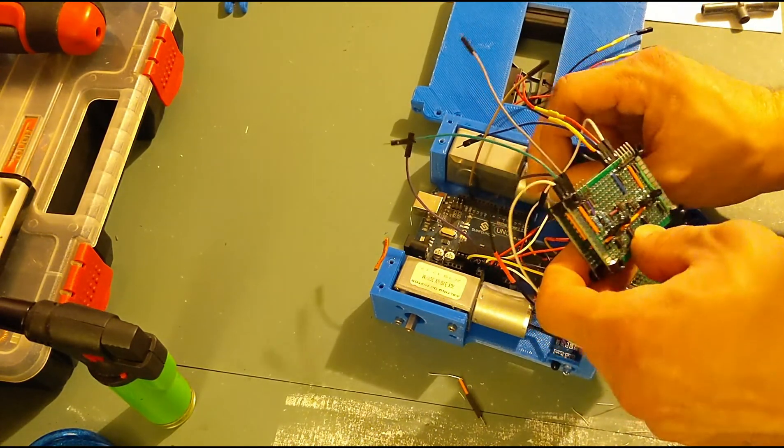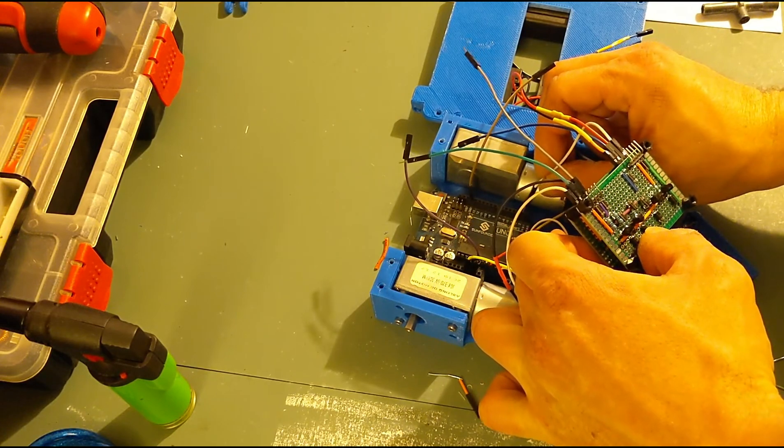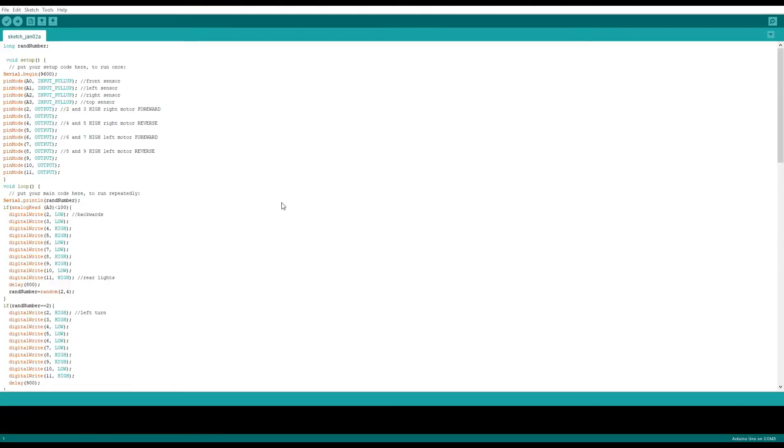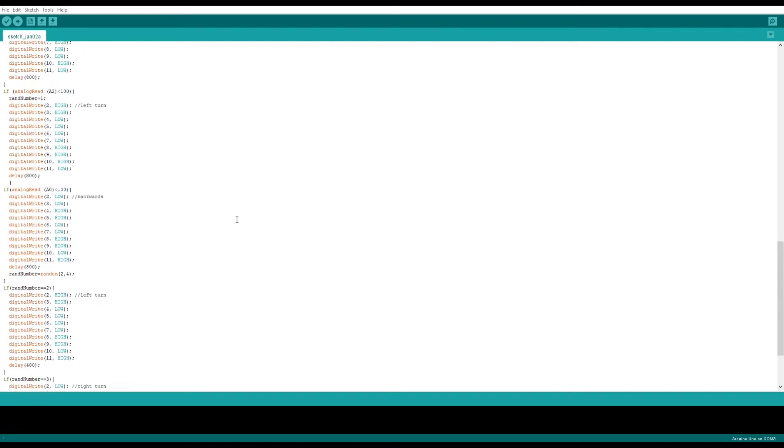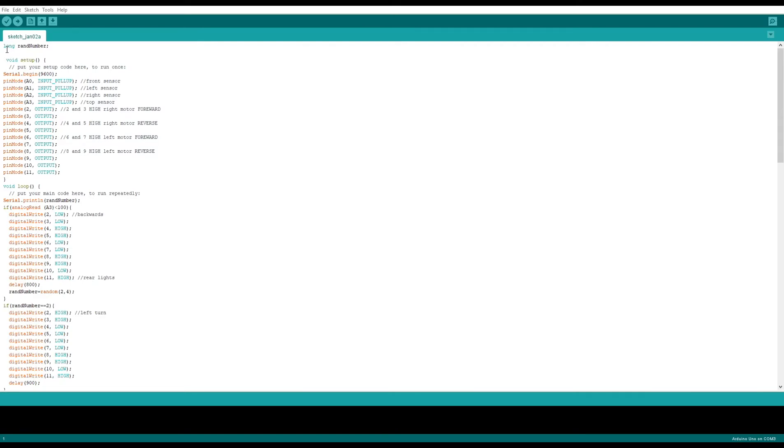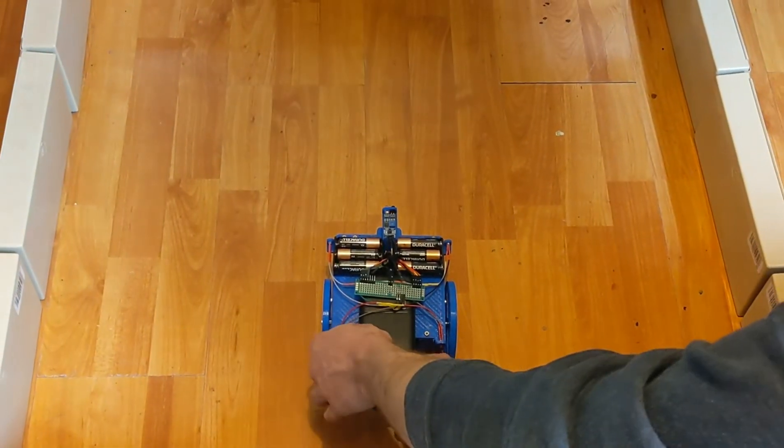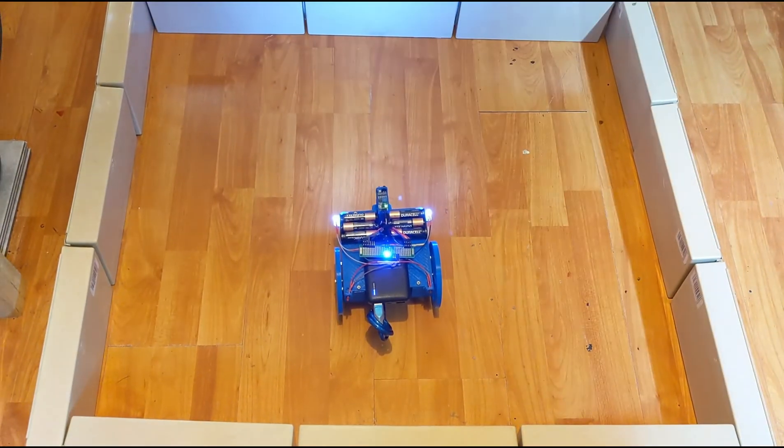Then we plug it all in, put it all together, and it's on to programming the Arduino. All we have is a bunch of if statements and a random function. I have a lot of inputs because I didn't feel like splicing any more wires, but nothing fancy. Here's my little test box area.